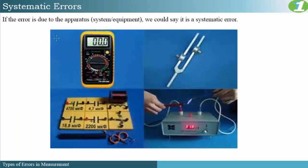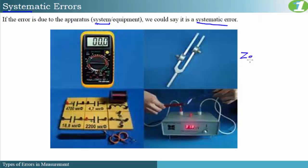The first main type of error is the systematic error. If the error is due to the apparatus, the system, or equipment, we say that it has a systematic error. Note the word systematic has the root word system — that is a good way to recall that systematic errors are associated with something being wrong with the system itself. For systematic errors, we have two main categories: zero error and calibration error.